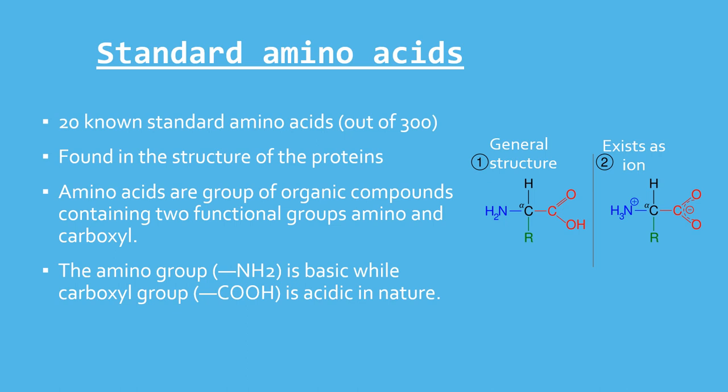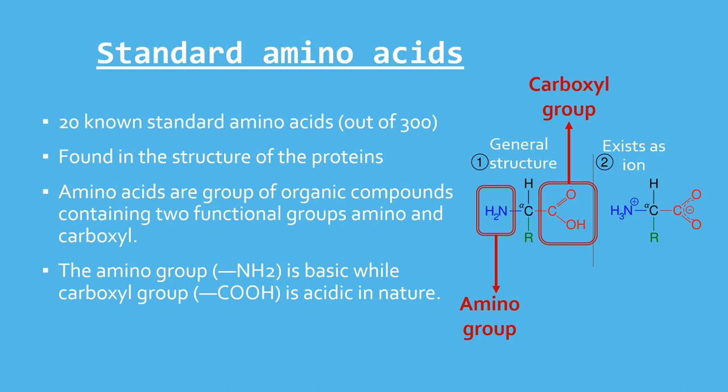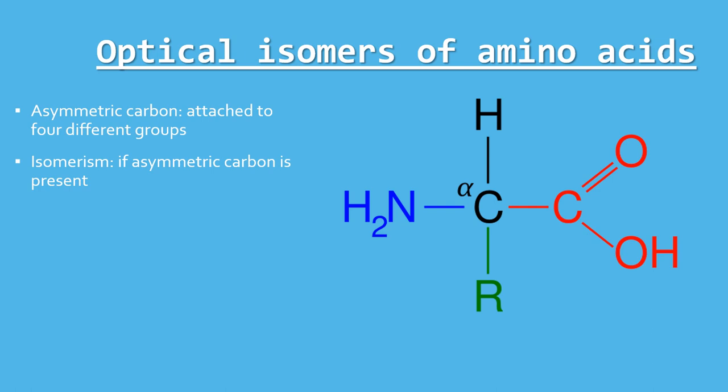Amino acids are a group of organic compounds containing two functional groups — one is amino and the other is carboxyl. The amino group is basic in nature whereas the carboxyl group is acidic in nature. Both these groups are attached to the carbon atom, called the alpha carbon atom. The amino acids are termed as alpha amino acids if both the carboxyl and amino groups are attached to the same carbon atom as depicted in the structure. The alpha carbon atom binds to a side chain represented by R, which is different for each of the 20 amino acids found in proteins. The amino acids mostly exist in the ionized form in the biological system.